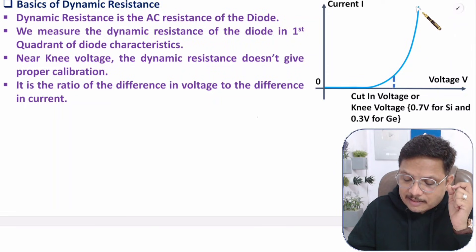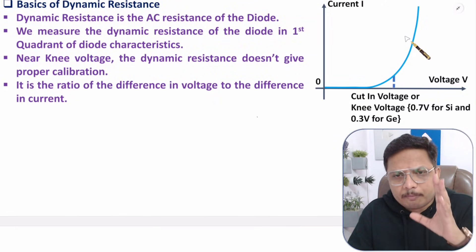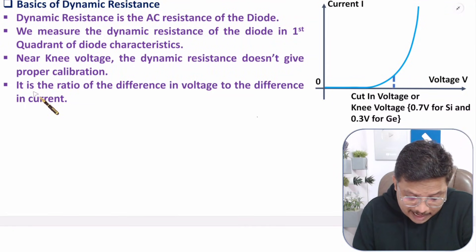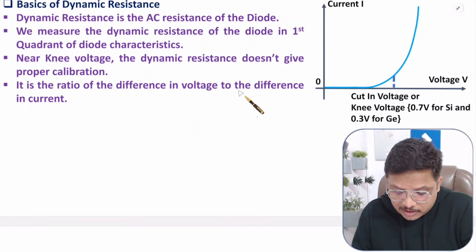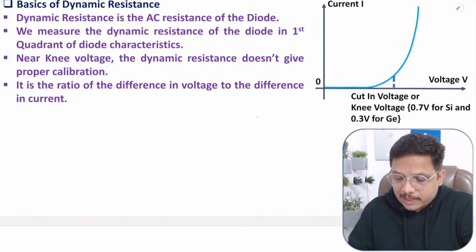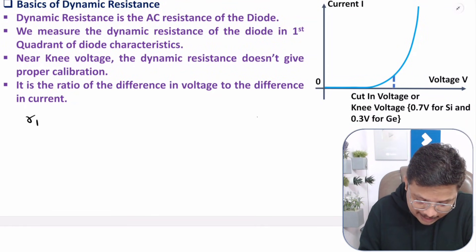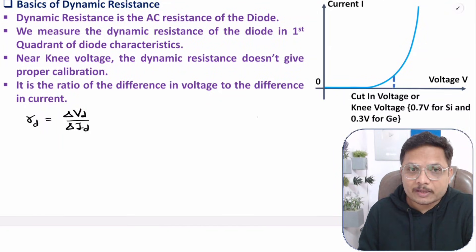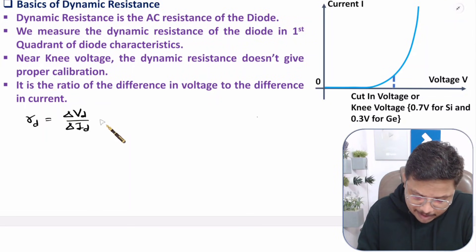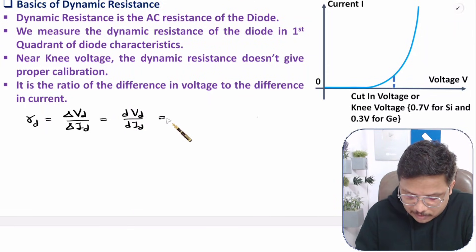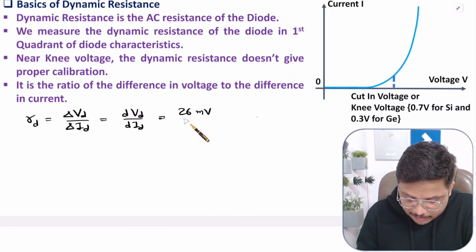You can calibrate dynamic resistance somewhere in the region above the knee voltage, where you will get proper calibration and a proper value of resistance. Dynamic resistance is a ratio of difference in voltage to difference in current. In forward bias, dynamic resistance RD equals delta VD divided by delta ID. If you want to calculate it by differentiation, then it is dVD by dID. But usually we don't use this formula — we use 26 millivolts divided by ID.